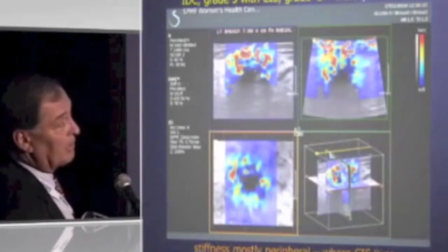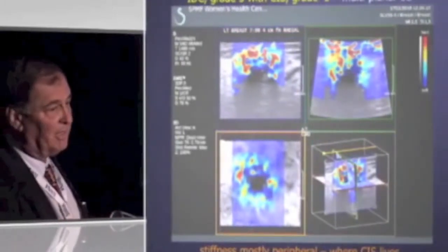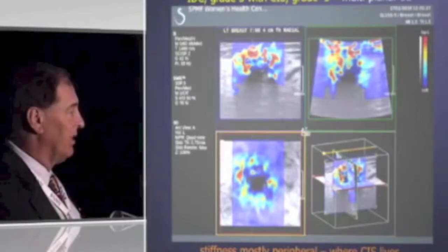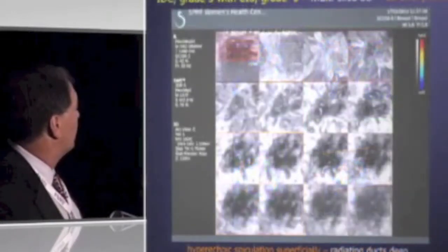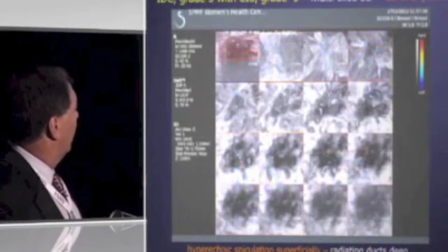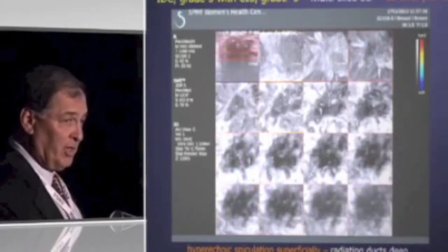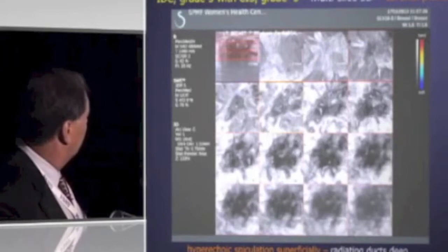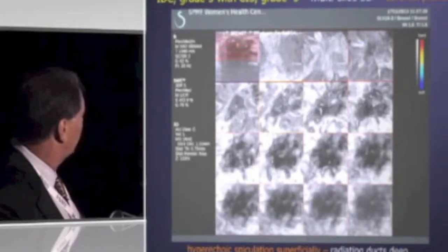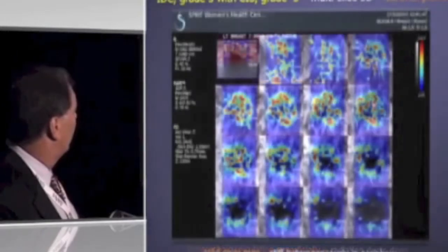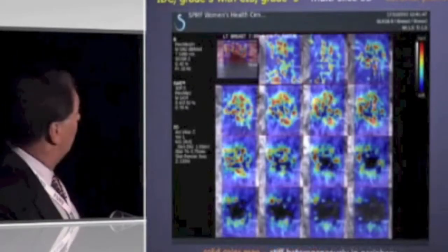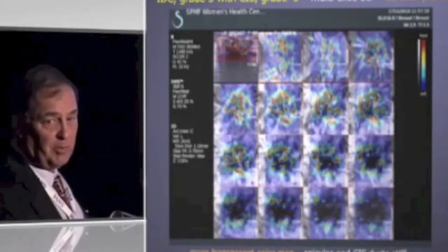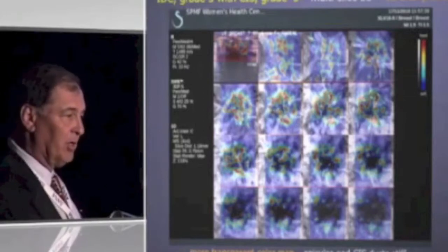This is the 3D map, and what I want to emphasize here is the heterogeneity. We've been saying that homogeneous in blue is great and heterogeneous is bad, but also notice the stiffness is in the periphery. This is a mixed invasive and DCIS lesion, and we can see from the serial sections that in the coronal plane superficially there are hyperechoic spicules extending into the surrounding tissues. Deeper, the radiating structures are actually ducts filled with calcifications representing grade 3 comedo DCIS. On the color map — and better on the more transparent map — the stiff areas correspond to the hyperechoic spicules superficially and the DCIS components growing into the surrounding tissue.